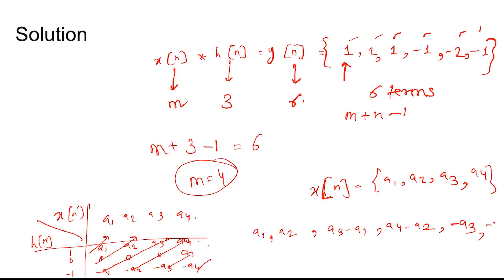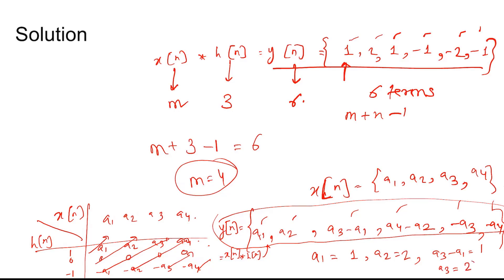This has 6 terms, which is y(n), the convolution of x(n) and h(n). Comparing y(n) with this result: a1 = 1 from the first term, a2 = 2 from the second term. a3 - a1 = 1, so a3 = 1 + a1 = 2. For a4, comparing the last term, we can determine all values: a1 = 1, a2 = 2, a3 = 2, a4 = 1.